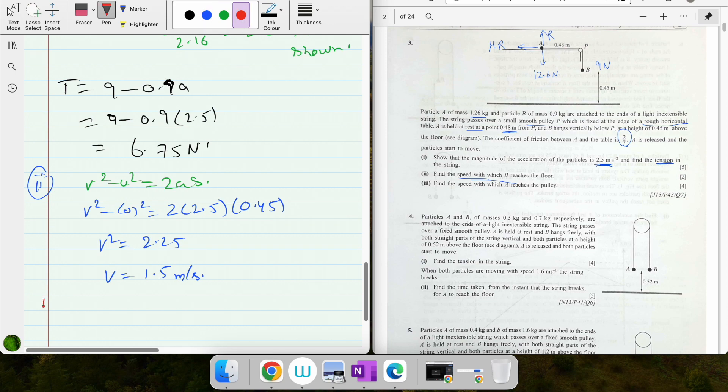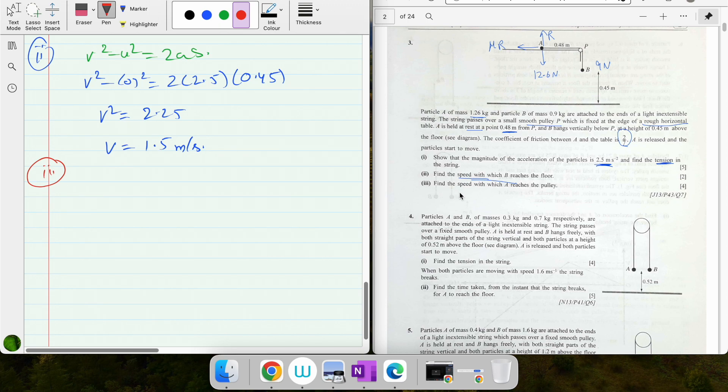Third part says find the speed with which A reaches the pulley. When B hits the floor, A actually keeps on moving. When B moved a distance of 0.45, A also moved a distance of 0.45. The complete distance is 0.48, so A comes from this point to this point covering 0.45, but after this point it has to cover some more. 0.48 minus 0.45 is 0.03.